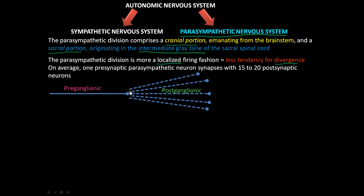As a little quiz: do you remember what neurotransmitter is here and what receptor? Because this is preganglionic to a postganglionic cell, acetylcholine is the neurotransmitter and the receptor is nicotinic. That applies to both the parasympathetic and the sympathetic nervous system. On the parasympathetic nervous system, there are only maybe 15 to 20 postganglionic neurons to one preganglionic neuron.